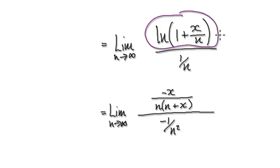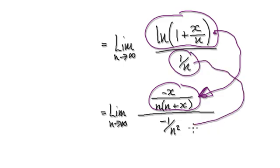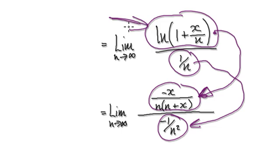Since we have zero over zero, we can apply L'Hôpital's rule — meaning we differentiate the top, which gives you this, and then differentiate the bottom, which gives you this.